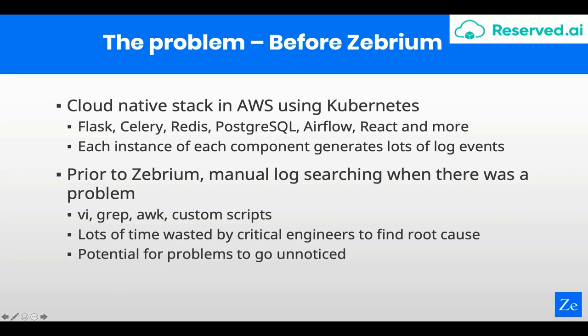Even worse, a lot of these root causes went unnoticed — because we often took the approach, like in the out-of-memory case, to just throw more resources at it, which is kind of ironic as a cost optimization company. A lot of them actually went unnoticed until the volumes exploded to the point where we really had to look at them.